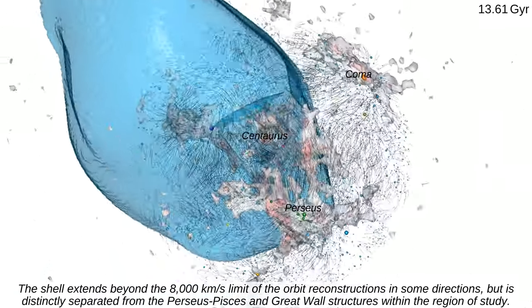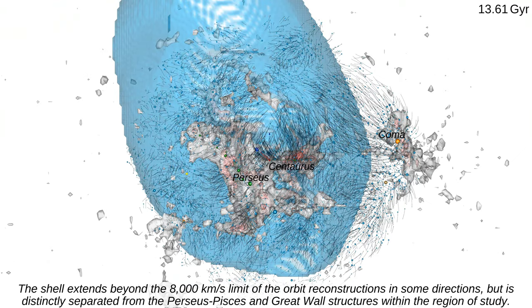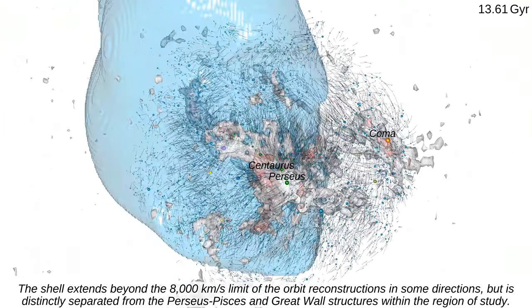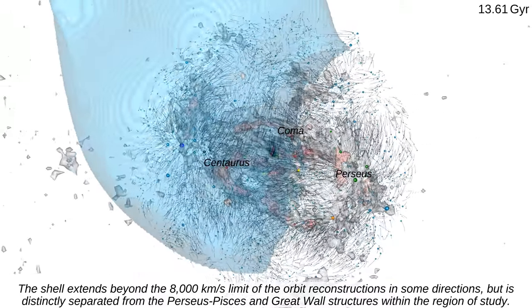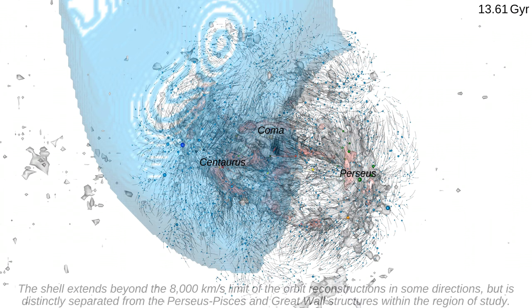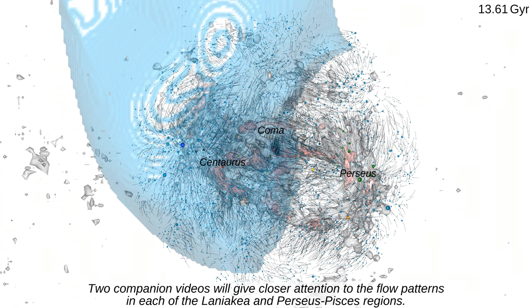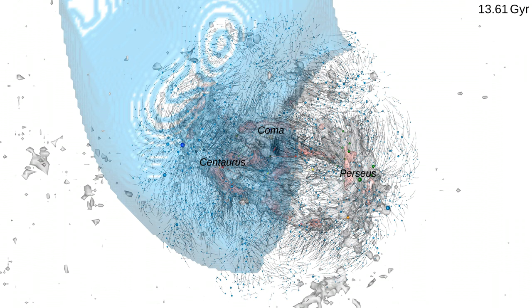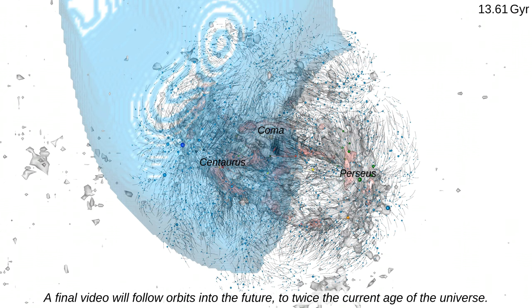We will give closer attention to the flow patterns in each of the Laniakea and Perseus-Pisces regions. A final video will follow orbits into the future to twice the current age of the universe.